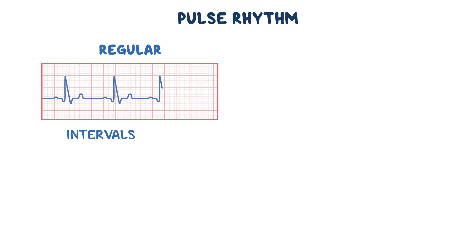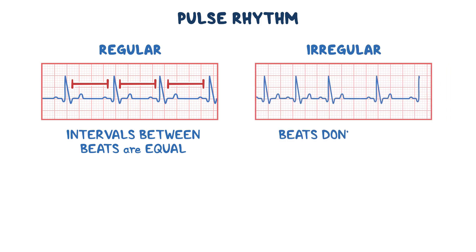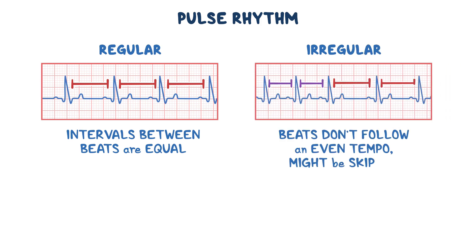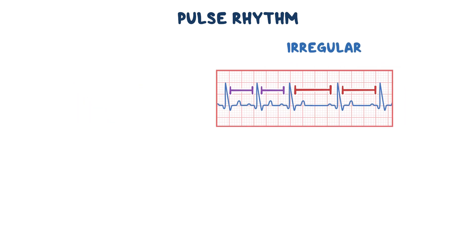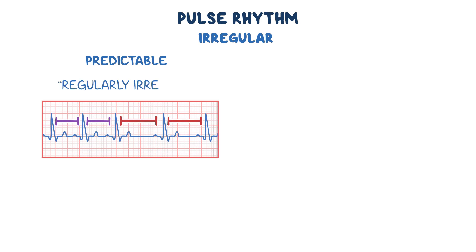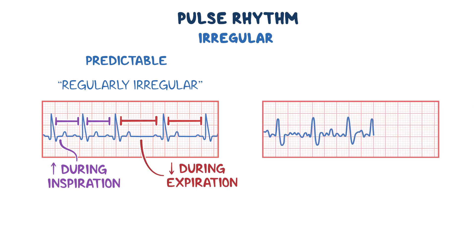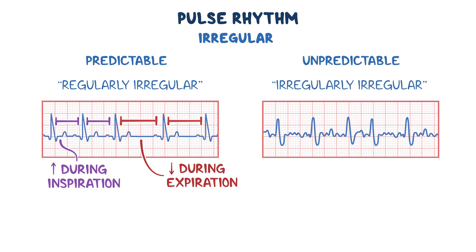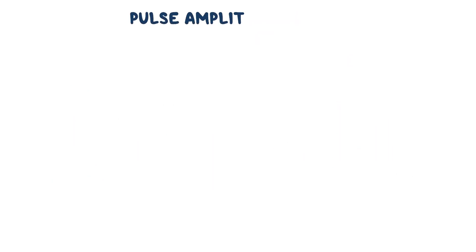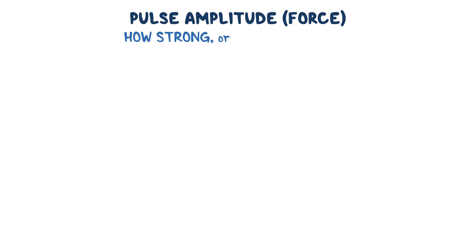Another important characteristic is the pulse rhythm, which is normally regular, meaning the intervals between the beats are equal. In an irregular rhythm, the beats don't follow an even tempo and some may even be skipped. It's useful to note whether the irregularity happens in a predictable or unpredictable way. A regularly irregular pulse follows the same pattern every time — an example is sinus arrhythmia, where heart rate increases on inspiration and decreases on expiration. If the pulse is irregular in an unpredictable pattern, it's called an irregularly irregular rhythm and can result from conditions such as atrial fibrillation.